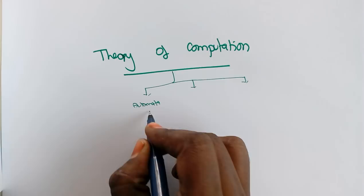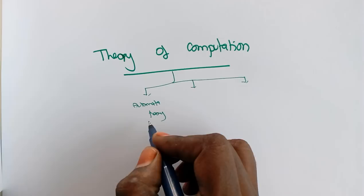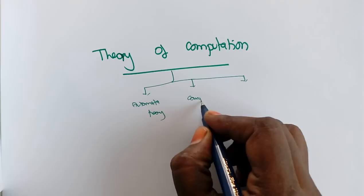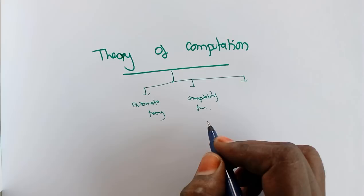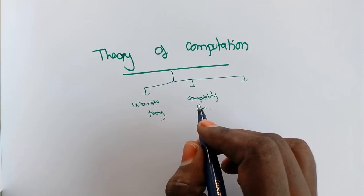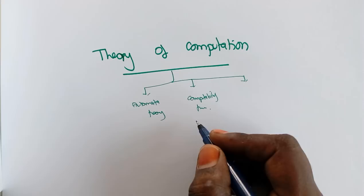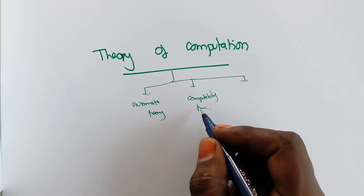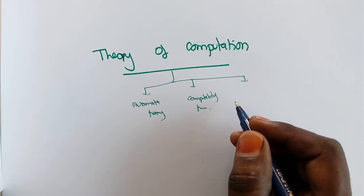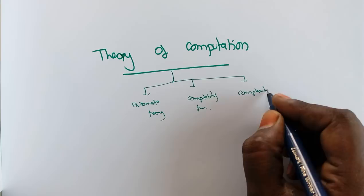Theory of Computation has three branches. The first is Automata Theory, which describes the computational devices or mathematical models that do some process. The second is Computability Theory, which says whether a problem can be solvable or not solvable. For example, there are some problems which cannot be solved by a computer — this theory gives a detailed description about decidable and undecidable problems.